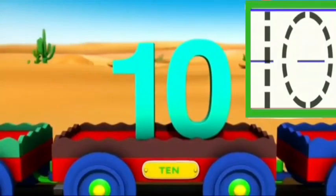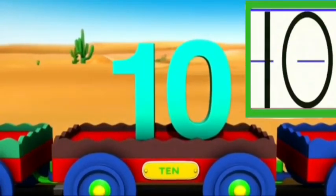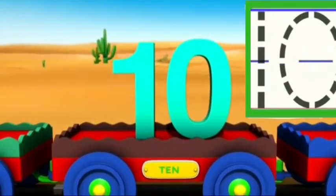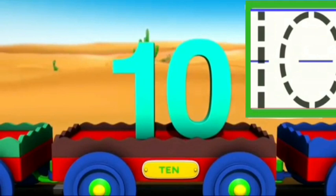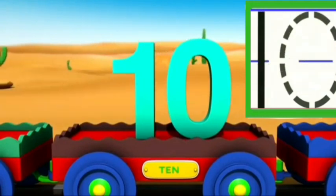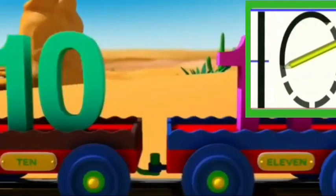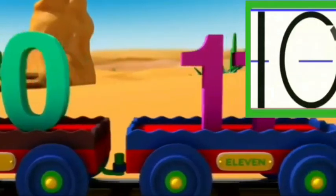To write 10, we start from top and go straight down. It looks like a stick. For 0, around and around we go. Then we get a cute 0.